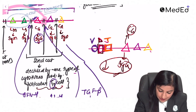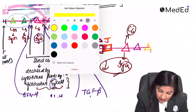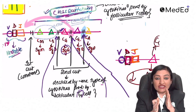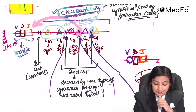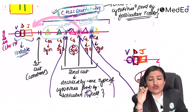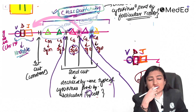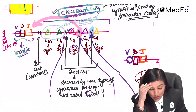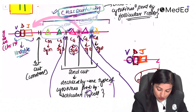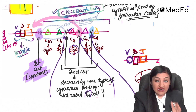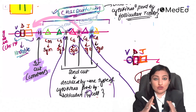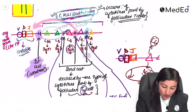For producing IgA, the second cut on chromosome 14 should be to the left of Cα — just before the constant region that encodes for IgA. To summarize: the first cut is always at the same place, right next to the VDJ region. The second cut is to the left of whichever constant region corresponds to the antibody class to be produced, and its position is determined by the cytokine produced by follicular T helper cells.